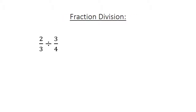Fraction division. Two over three divided by three over four. Multiply by the reciprocal: two over three times four over three equals eight over nine.